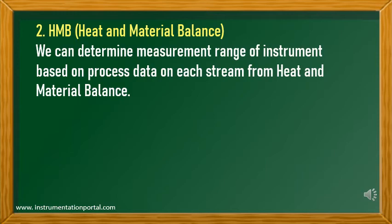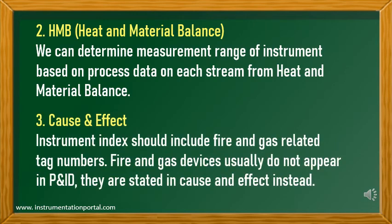Second, HMB or Heat and Material Balance. We can determine the measurement range of instruments based on process data on each stream from the heat and material balance. Third, Cause and Effect. The instrument index should include fire and gas related tag numbers. Fire and gas devices usually do not appear in P&ID; instead, they are stated in the cause and effect.